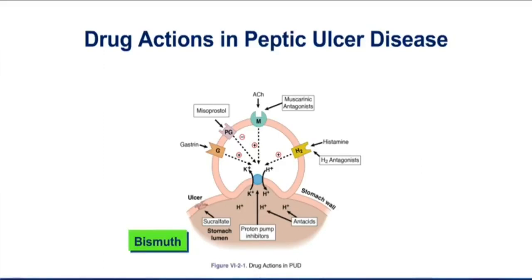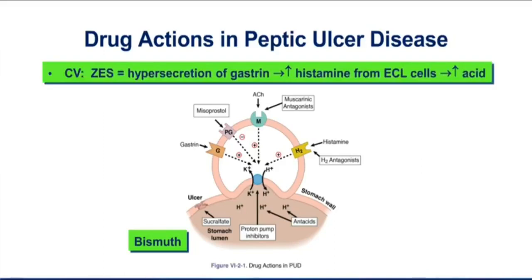There's a clinical vignette on this slide about Zollinger-Ellison syndrome. Most of you have learned Zollinger-Ellison is a gastrinoma — you get hypersecretion of gastrin. Gastrin all by itself can activate the proton pump, but gastrin can also cause histamine release from enterochromaffin-like cells. So in Zollinger-Ellison, you're actually seeing two pathways to activate the proton pump and increase acid production.